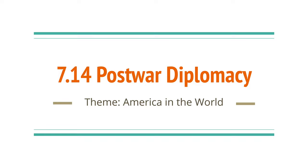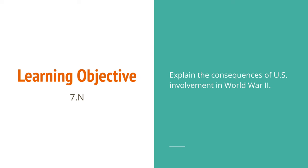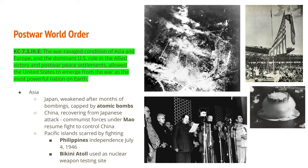Hello and welcome back to lecture number 73. This is the second to last lecture in Period 7 and the topic is 7.14 post-war diplomacy. Our theme for today is America in the world. The learning objective is to explain the consequences of U.S. involvement in World War II, and we have one key concept that we'll explain over three separate slides talking about what the post-war world order is going to look like.